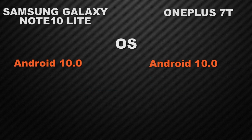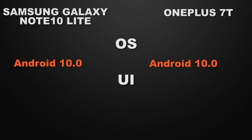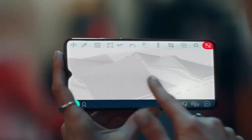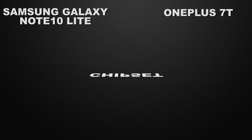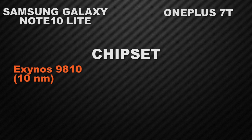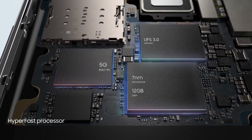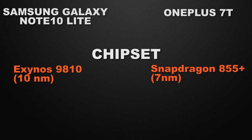Let's talk about the performance of the devices. Both come with Android 10 operating system, so there is a tie. Talking about the user interface, Samsung Galaxy Note 10 Lite comes with One UI 2.0 and OnePlus 7T comes with Oxygen OS, so it's up to you which interface you like. For the processor, Note 10 Lite comes with Exynos 9810 and OnePlus 7T comes with Snapdragon 855+, so the winner is OnePlus 7T because it has a 7nm processor which is more power efficient than the Exynos 10nm processor.